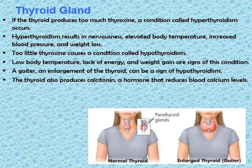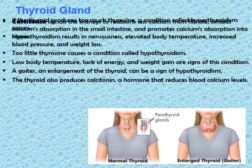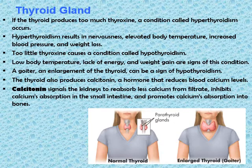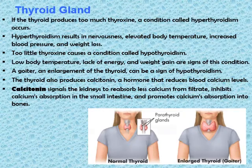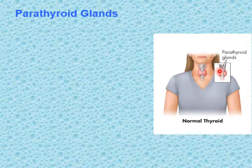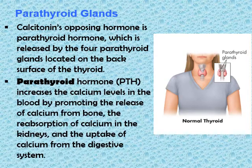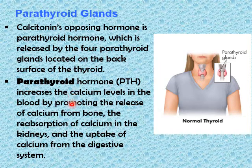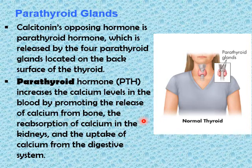The thyroid also produces calcitonin, a hormone that reduces blood calcium levels. Calcitonin signals the kidneys to reabsorb less calcium from kidney filtrate, inhibits calcium absorption in the small intestine, and promotes calcium absorption into bones. The parathyroid glands are four glands on either side of the thyroid gland. They secrete parathyroid hormone (PTH), which is antagonistic to calcitonin. PTH increases calcium levels by promoting the release of calcium from bone, the reabsorption of calcium in kidneys, and the uptake of calcium from the digestive system.